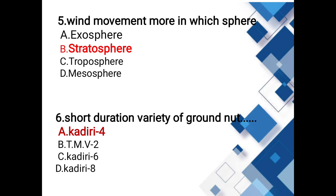Wind movements are more in which sphere? Options: exosphere, stratosphere, troposphere, mesosphere. The answer is stratosphere. The order of atmospheric layers is: troposphere, stratosphere, troposphere, mesosphere, thermosphere, then exosphere.